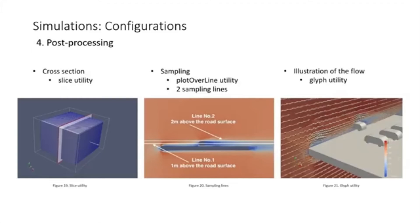There are three utilities used in the post-processing. The first one is the slice utility, which is used to select a cross-section to study. The second one, the plot over line utility, is applied to sample data from the field. There are two sampling lines. One is one meter above the road surface. The other is two meters above the road surface, representing the flow conditions at the top of the vehicle. And third is the glyph utility, which is used to illustrate the direction of fluid flow.